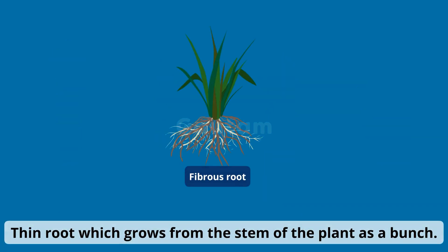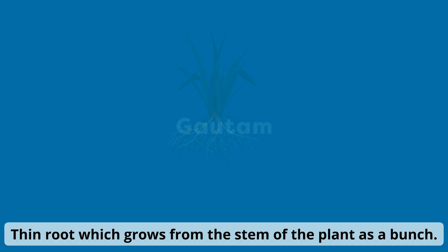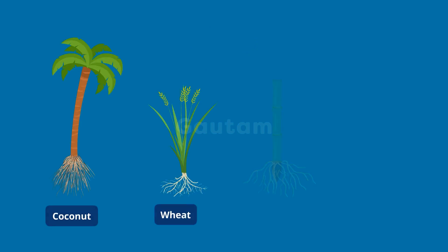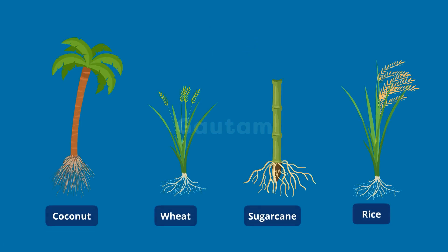A fibrous root is a thin root which grows from the stem of the plant as a bunch. Coconut, wheat, sugarcane and rice have fibrous root systems.